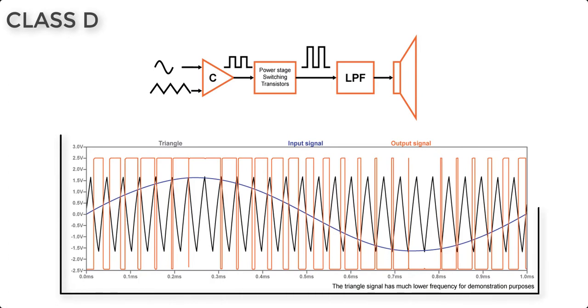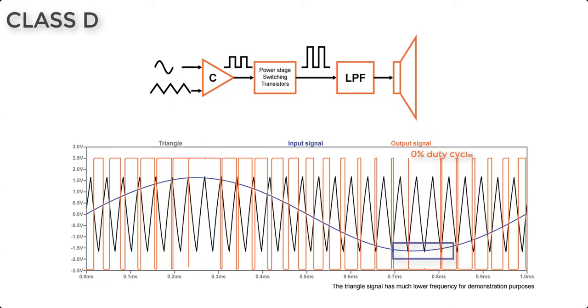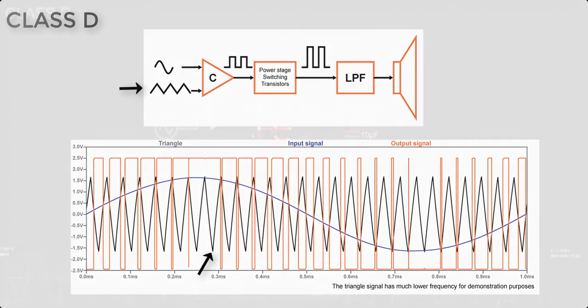As you can see in this plot, you can see how we transform a sinusoidal signal, which is the input, into a rectangular signal by comparing it to a triangle signal. At the positive peak of the sine wave, the duty cycle of the rectangular pulse is 100%, whilst at the negative peak, it is 0%. The actual frequency of the triangle signal is much higher, on the order of hundreds of kHz, so that we can later extract our original signal.